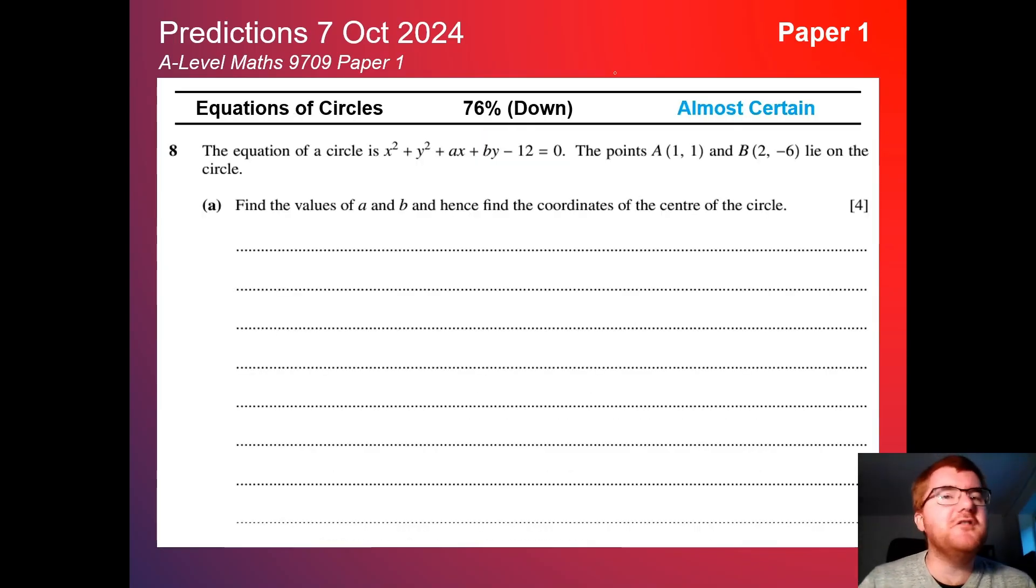On to equations of circles. As I said I would mention, this is slightly down at 76%. However, I would clarify this slightly - it's often towards the end of the paper, so that's something definitely to consider if you're looking for those very top grades. This is a typical example question here, where you need to find A and B by putting it into bracket form and then find the coordinates of the center of the circle.